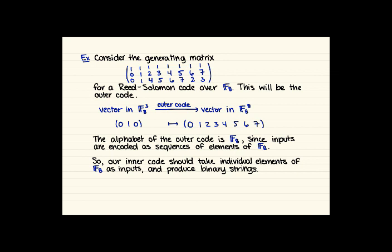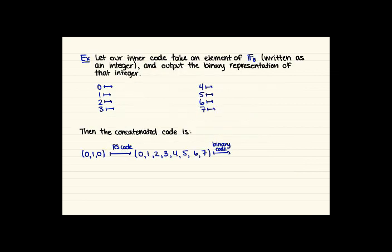So our inner code is going to take individual elements of F8 as inputs and produce binary strings out of those so that our final output is going to be in binary.